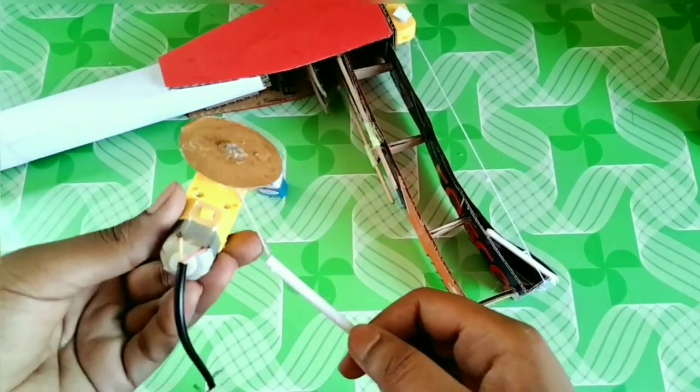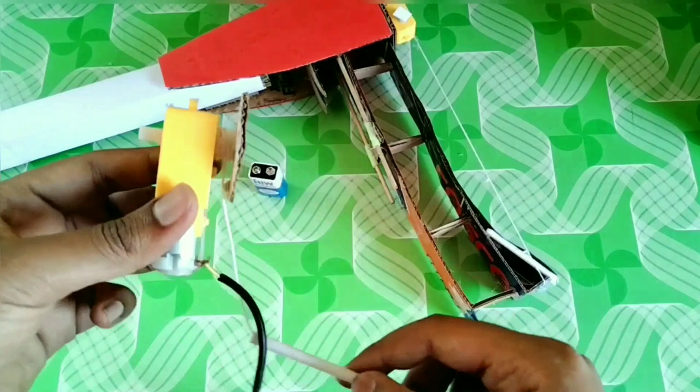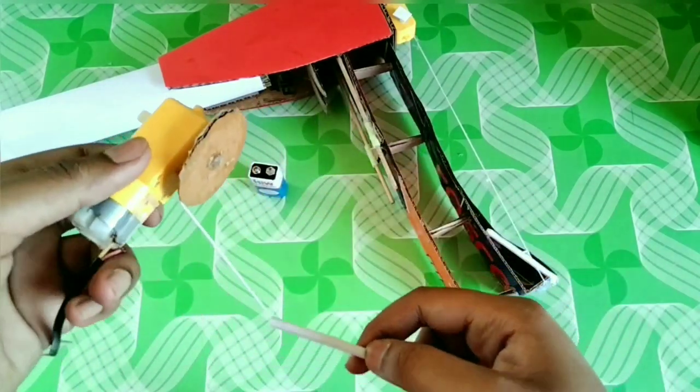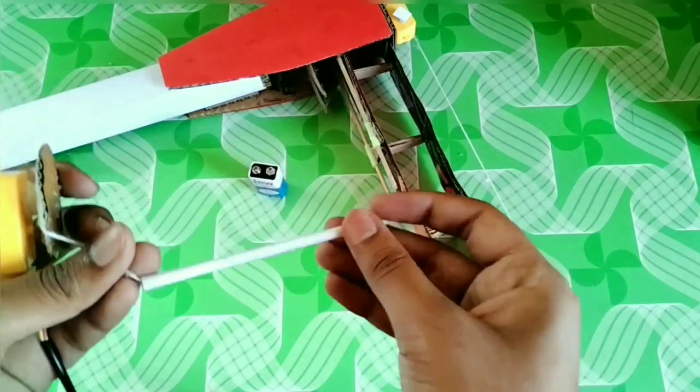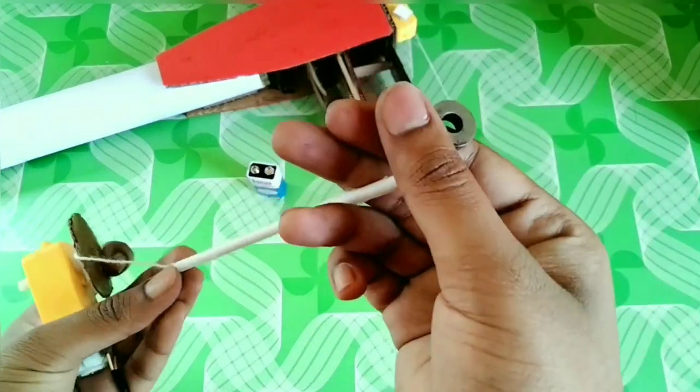Take long thread, paste one end at another motor shaft and pass the thread through a pipe. Tie the another end of the thread around a circular magnet.